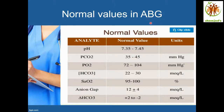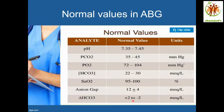These are the normal values in ABG: pH 7.35 to 7.45; PCO2 35 to 45; PO2 72 to 104; bicarbonate 22 to 30; O2 saturation 95 to 100%; anion gap 12 plus or minus 4; and corrected bicarbonate plus 2 to minus 2.